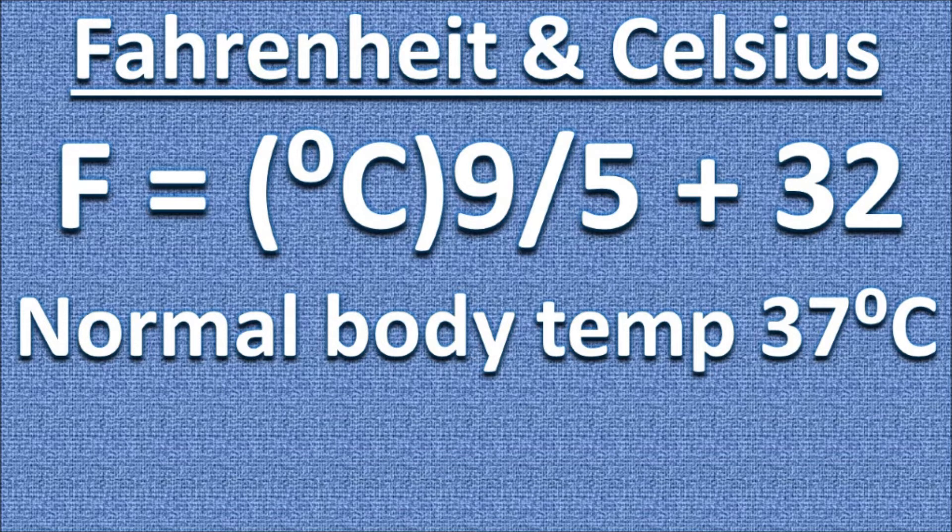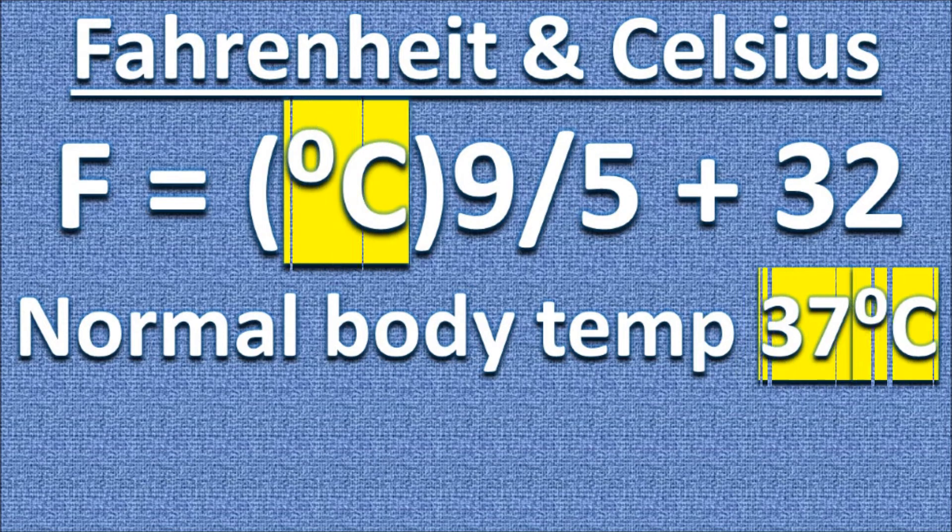We know that a normal body temperature is about 37 degrees Celsius. Let us plug 37 degrees in for C.